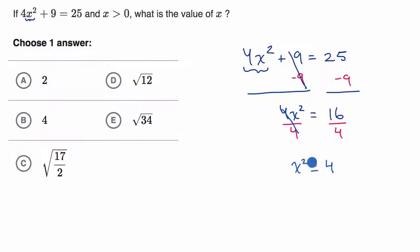And so you could say, you could either just try to think through, well, what number squared is equal to four, or, and this is where you have to be careful, you would say x is equal to the plus or minus square root of 4.